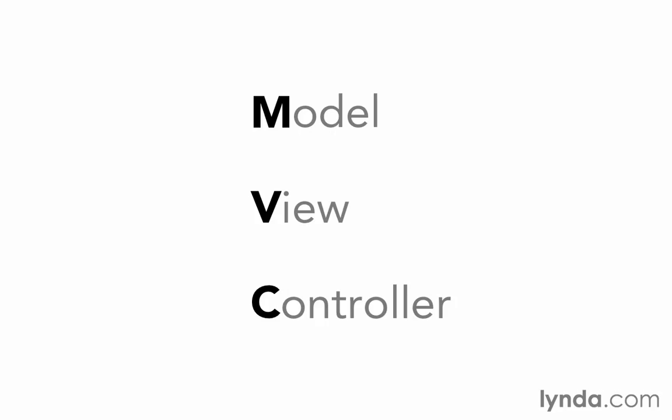The controller processes and responds to user events, such as clicking on links and submitting forms. The controller will make decisions based on the request and then control what happens in response. It controls the interaction with our models and with our views.